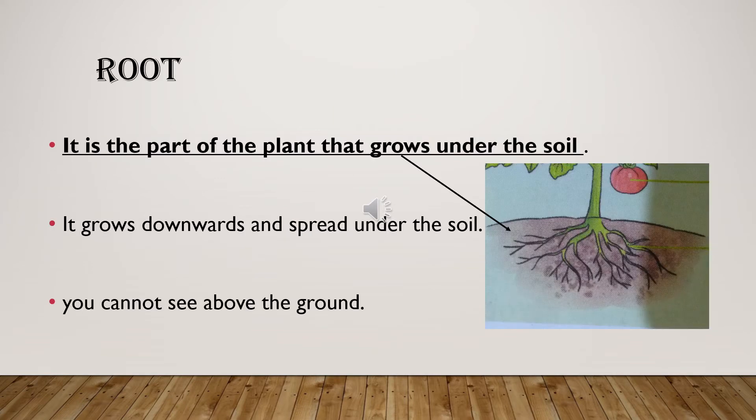Let's understand about root. What is root? It is the part of a plant that grows under the soil — root is the underground part of a plant. It always grows downwards and spreads under the soil. Roots are of different shapes and sizes, and we cannot see roots above the ground; they are always found under the ground.